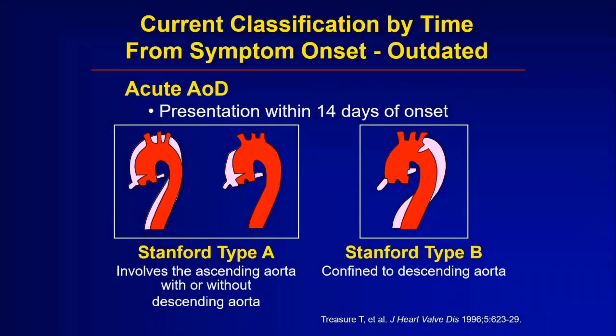How do we classify patients who have aortic dissection? There are several ways to do this. The simplest system I like to use is called the Stanford classification system. On the left side of this slide, you see an aortic tear just above the aortic valve — this is the early part of the aorta before it goes over the top and down, called the ascending aorta. When the ascending aorta is involved, we call that a type A dissection. No matter how far it extends, if the ascending aorta is involved, it's a type A.